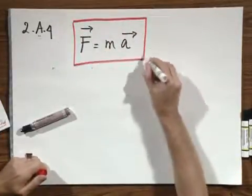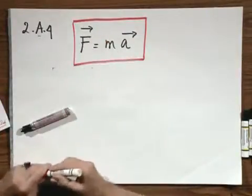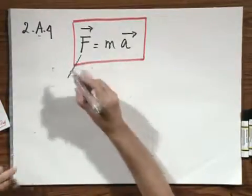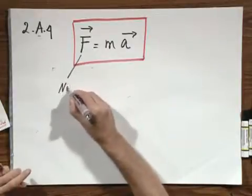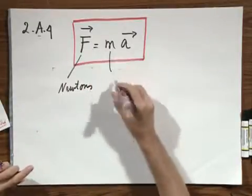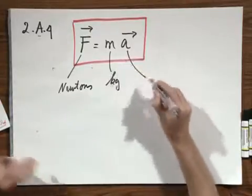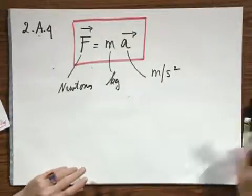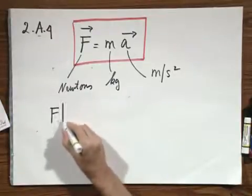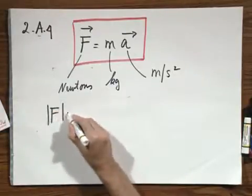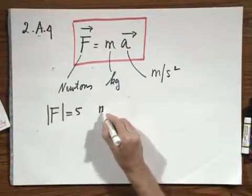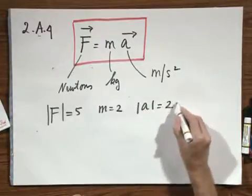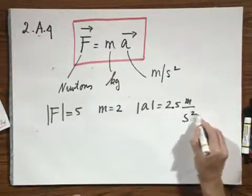It's a vector equation. The acceleration A is in the same direction at any moment in time that the force acts. F, in terms of magnitude, we express in Newtons. M is a scalar in kilograms, and A is a vector whose magnitude is meters per second squared. For example, if the magnitude of F is five Newtons and the mass is two kilograms, then the magnitude of the acceleration is two and a half meters per second squared.